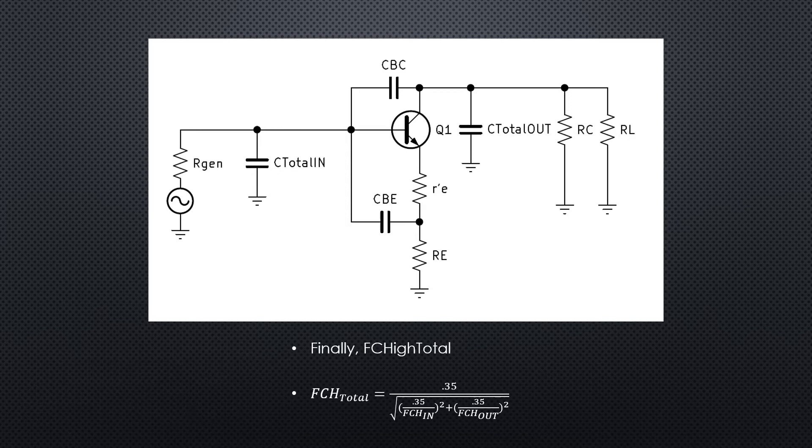Here's our final formula for calculating FC high total. We've arrived. It's 0.35 divided by the square root of the quantity 0.35 divided by FC high in squared plus 0.35 divided by FC high out squared. That gives us our final FC high total for the circuit.